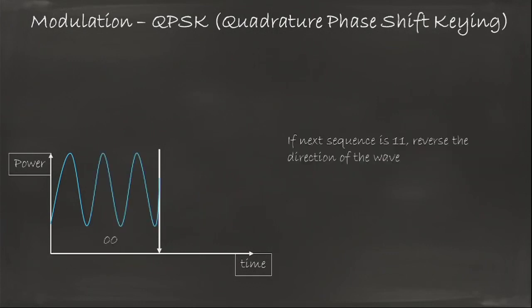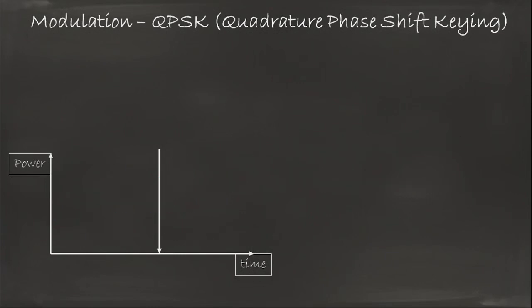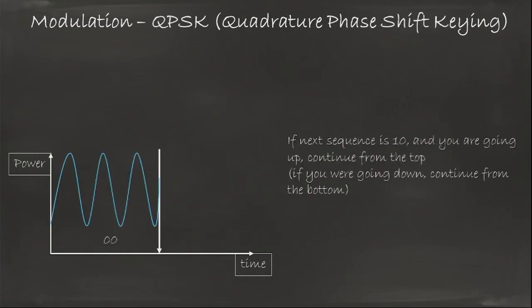If I want to send instead one one I could do what I do for BPSK and suddenly change direction. And if I want to say one zero, if I was going up well I'll continue going up but actually I'll jump directly to the top of the wave which means that I will start from the top and go down. So you see we have four changes.